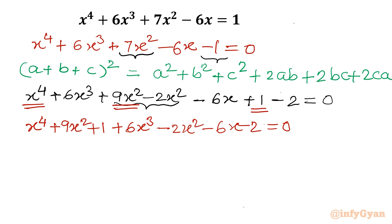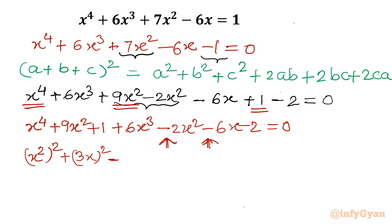You can notice we have two negative signs, so it is not simply (a + b + c)² — there is a minus sign involved. I can see x⁴ as (x²)², and 3x whole squared. Since there is a minus sign, I think of (-1)². So if a = x², b = 3x, c = -1.